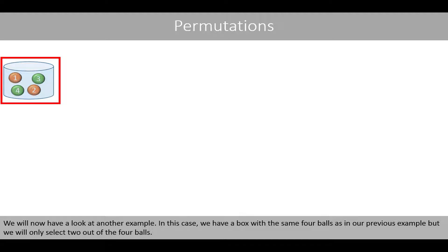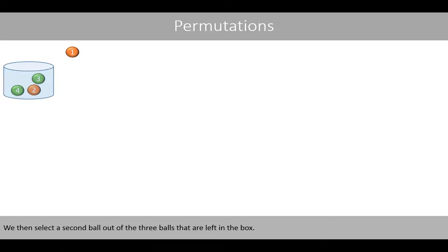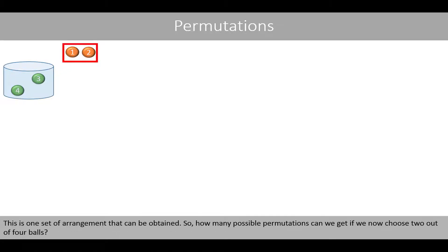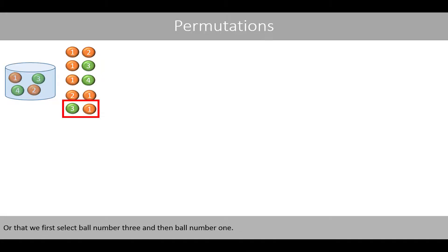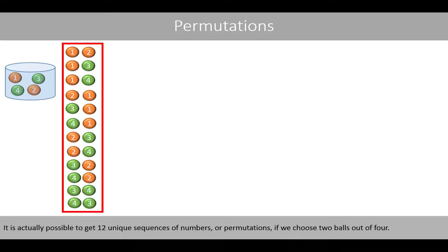We'll now have a look at another example. In this case, we have a box with the same 4 balls, but we will only select 2 out of the 4 balls. We'll randomly draw 2 balls without replacement: first one ball from the box, then a second ball from the 3 balls that are left. How many possible permutations can we get if we choose 2 out of the 4 balls? It is possible to first select ball number 1 then ball number 3, or first ball number 3 then ball number 1. It is actually possible to get 12 unique sequences.